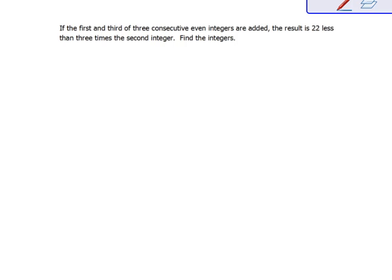Alright, here we have another application problem, and this one is talking about consecutive even integers. So let's read through the problem first. If the first and third of three consecutive even integers are added, the result is 22 less than three times the second integer. Find the integers.